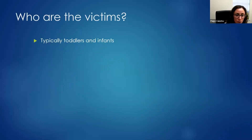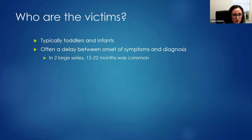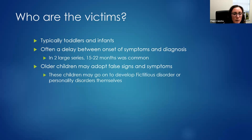The victims we see are usually toddlers and infants. It can happen at any age, but it's a little easier to identify in younger kids. Typically there is a delay between the onset of symptoms and when the child is actually diagnosed with medical child abuse — in the series I'm referring to, typically a 15 to 22 month period before concern for medical child abuse was raised. Older children are more difficult because as they get older, they can adopt false symptoms themselves and may go on to develop fictitious disorder or personality disorders in the future.